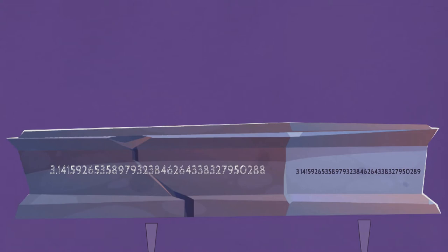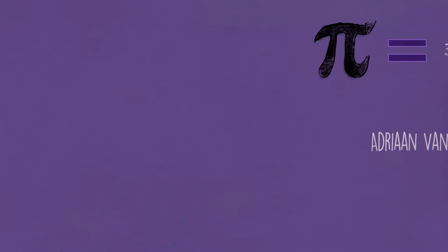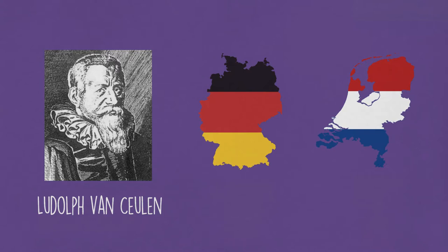This credit goes to the man who is in the tomb, because he is the first to calculate the exact value of pi up to 35 decimal places, breaking the record of Adrian van Roomen, who calculated up to 15 decimal places. He is Ludolph van Ceulen, a German-Dutch mathematician.